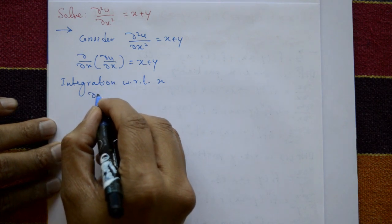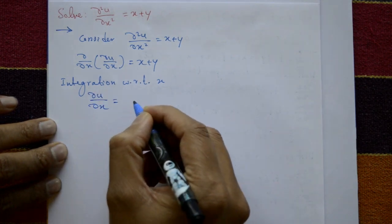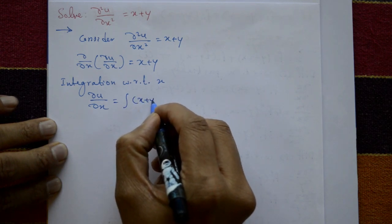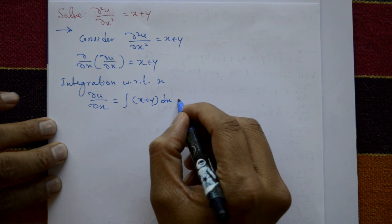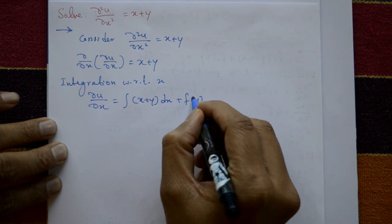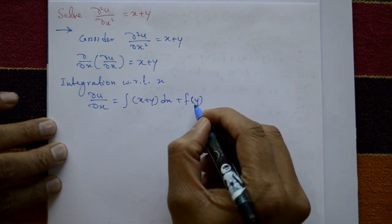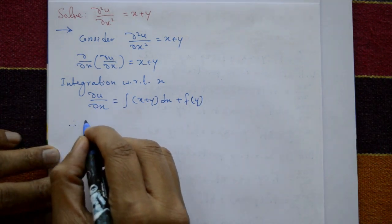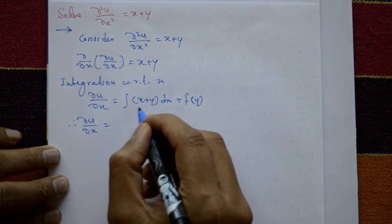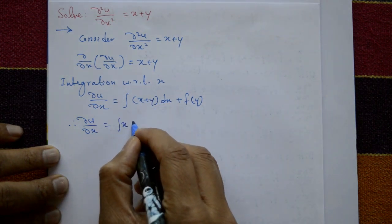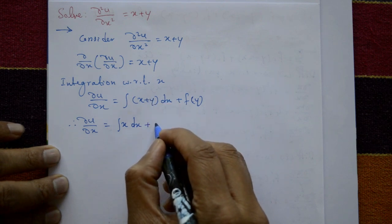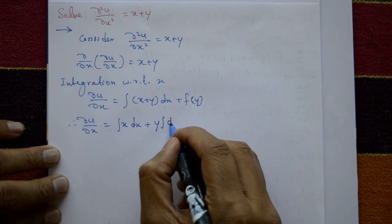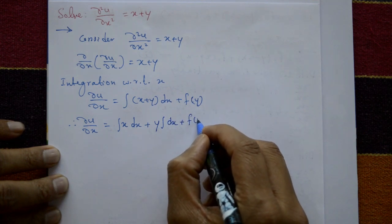After integrating the left-hand side, only ∂u/∂x remains. Integrating the right-hand side — integration of x + y with respect to x — gives x²/2 + yx + f(y), where f(y) is an arbitrary function of y. Separate the terms: integration of x dx plus y, treated as a constant, taken outside, times ∫dx, plus arbitrary constant.